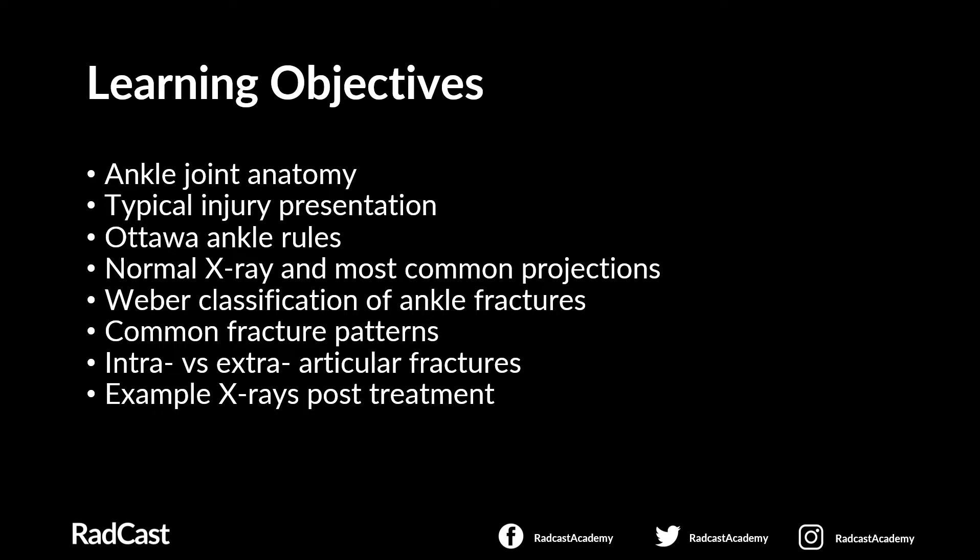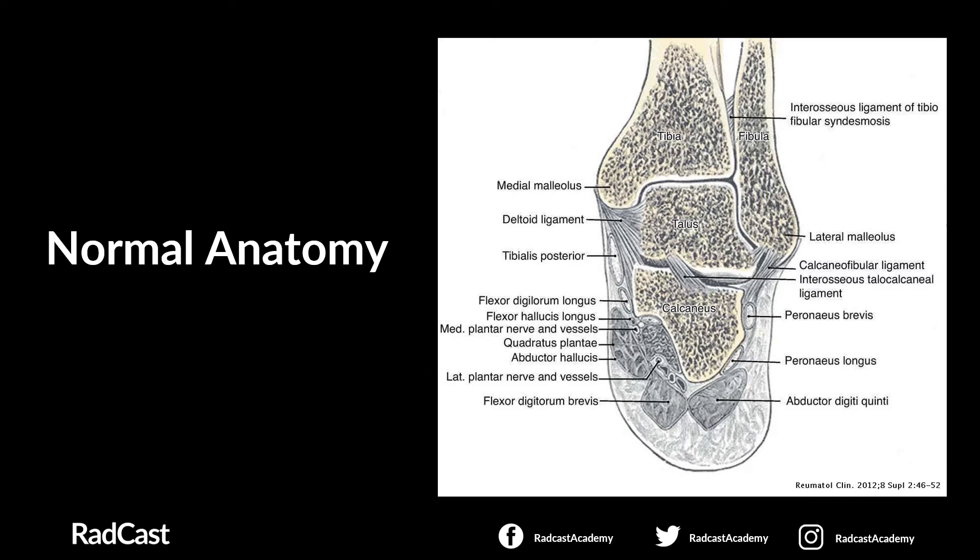During the presentation we'll cover normal ankle joint anatomy, some typical injuries and their presentations. We'll talk about Ottawa ankle rules for determining which patients require imaging, and have a look at some normal x-rays in the most common projections. Following that, we'll talk about the Weber classification and common fracture patterns including intra- and extra-articular fractures. To conclude, we'll have a look at some post-treatment x-rays.